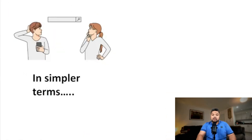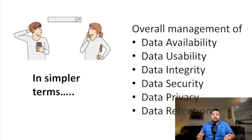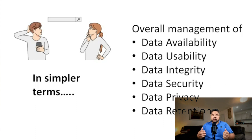To break this down in simpler terms, data governance is the overall management of data availability, data usability, data integrity, data security, data privacy, and data retention within an organization. The data governance team is responsible for all these different key activities from the angle of data.